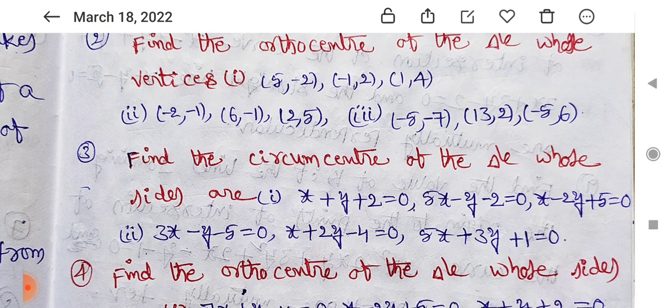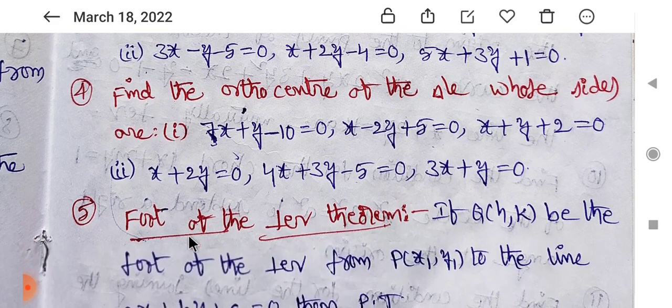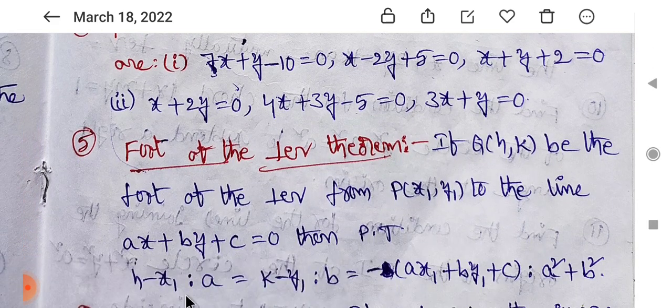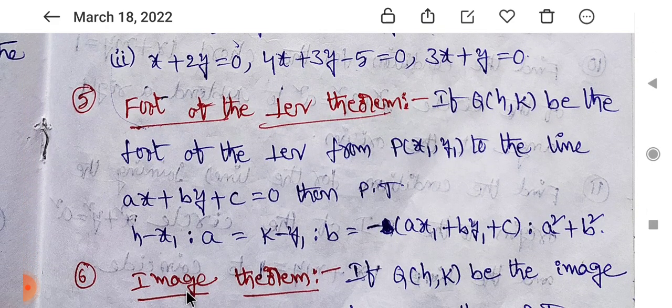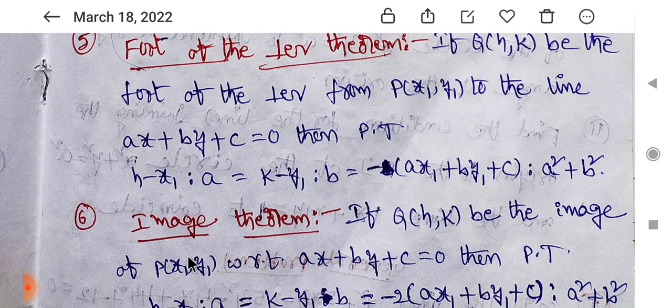This is the circumcenter of the triangle. The theorem: h minus x1 by a equals k minus y1 by b. Then the ratio is steady.